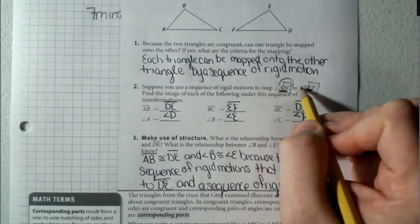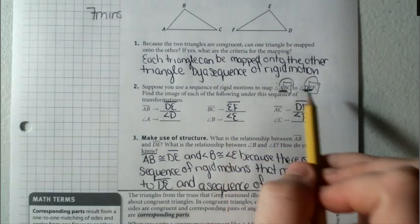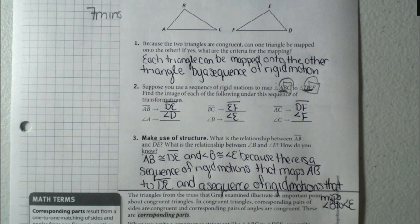AC would go DE. Angle A is my match to angle D. Angle B matches angle E and angle C goes to F.